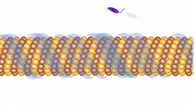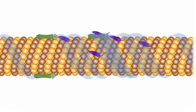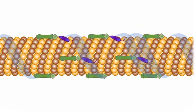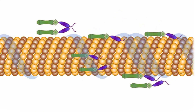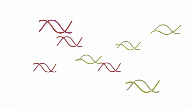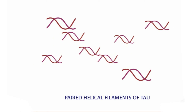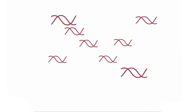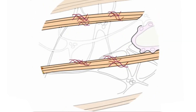But in Alzheimer's disease, extra phosphate groups are added to the tau protein, causing it to become sticky. When this happens, tau proteins pair up and twist around one another, forming a helical shape. Once this occurs, the transport system of affected nerve cells collapses.